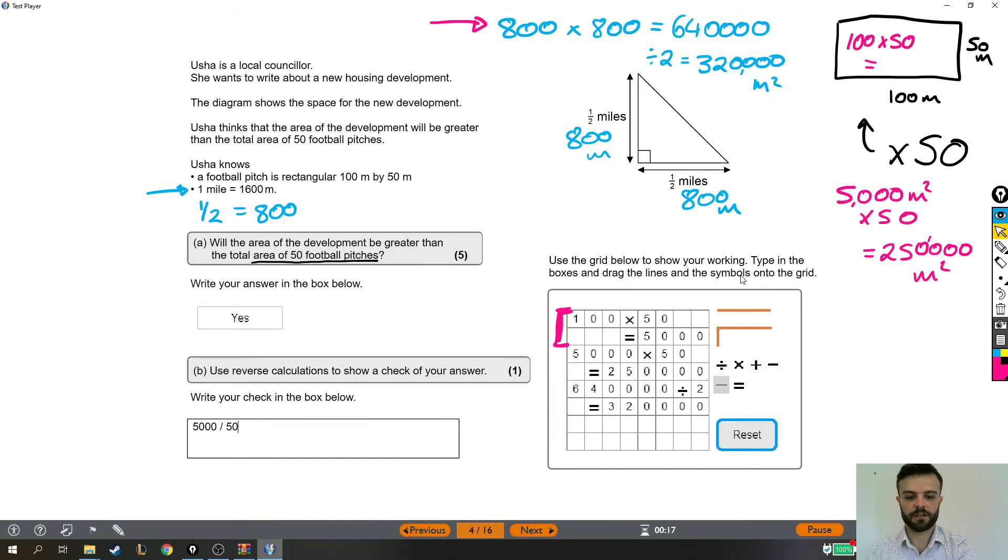And in fact it is. So 5,000 divided by 50 is 100, which shows this original calculation was correct. You'll notice as well that instead of divide, I've just put the slash sign here, which is fine—that's an acceptable replacement for the divide sign. And there we have it.